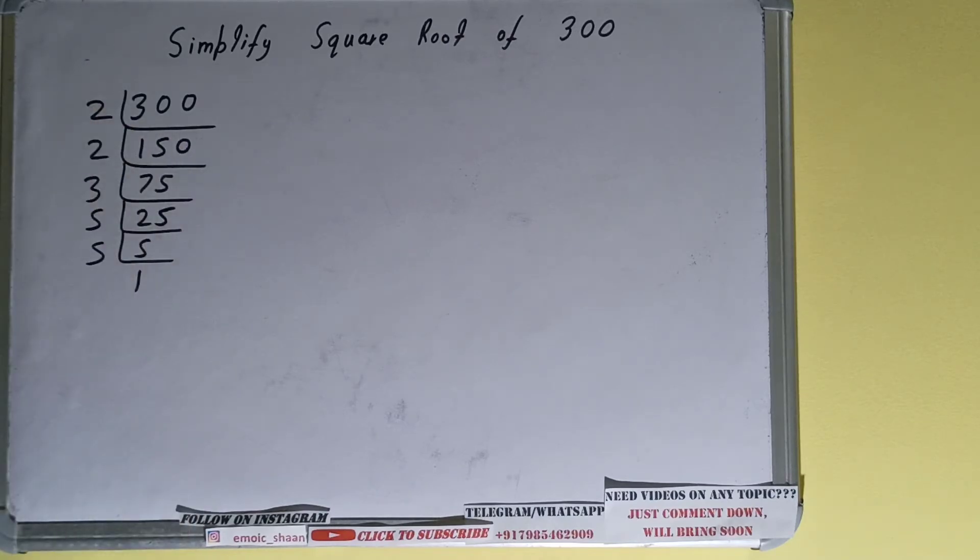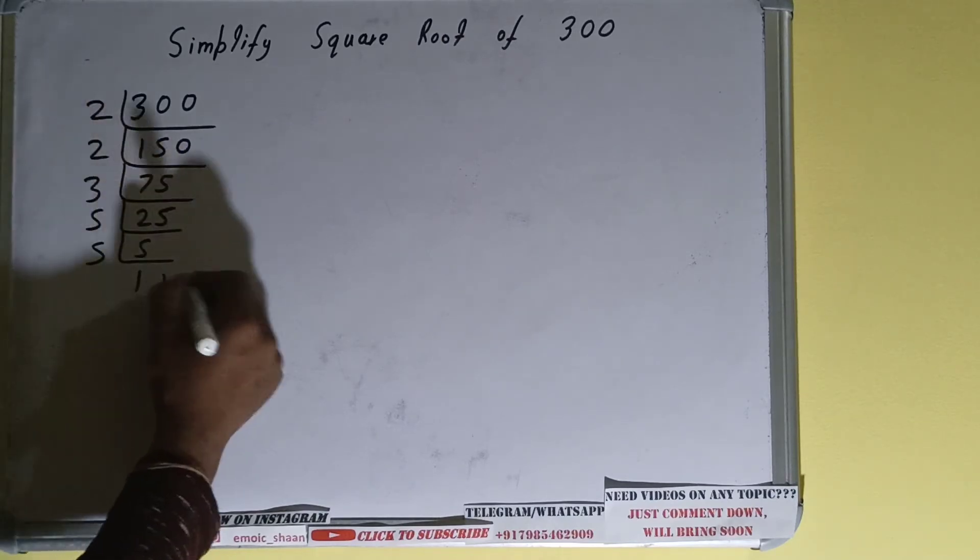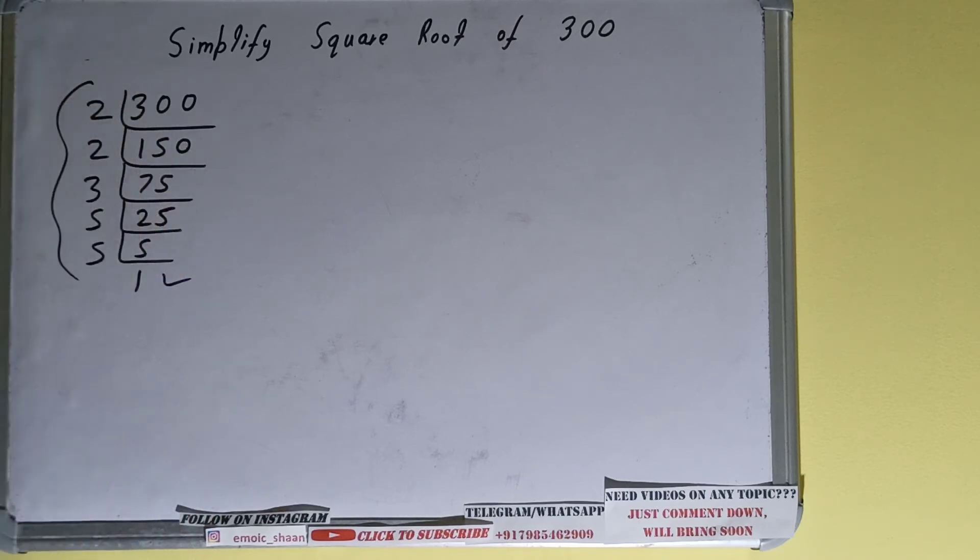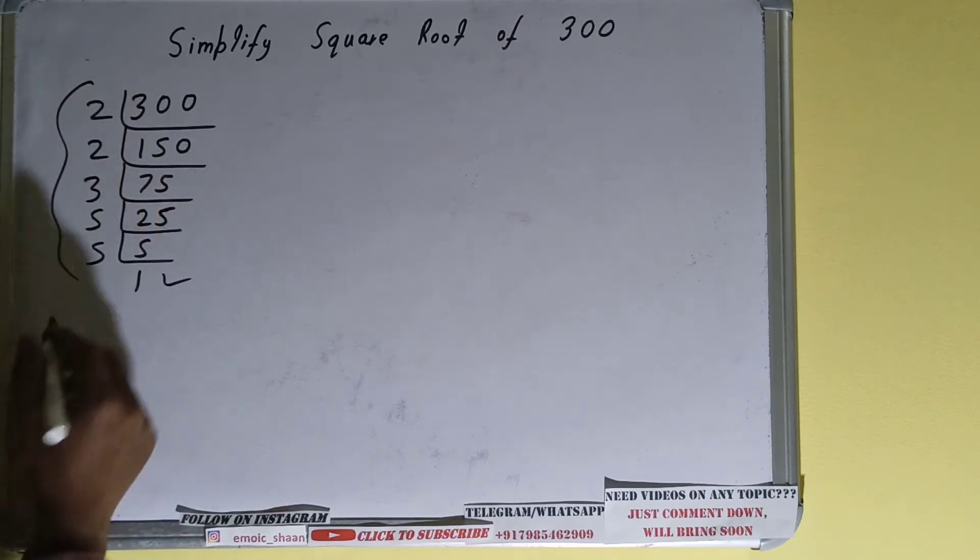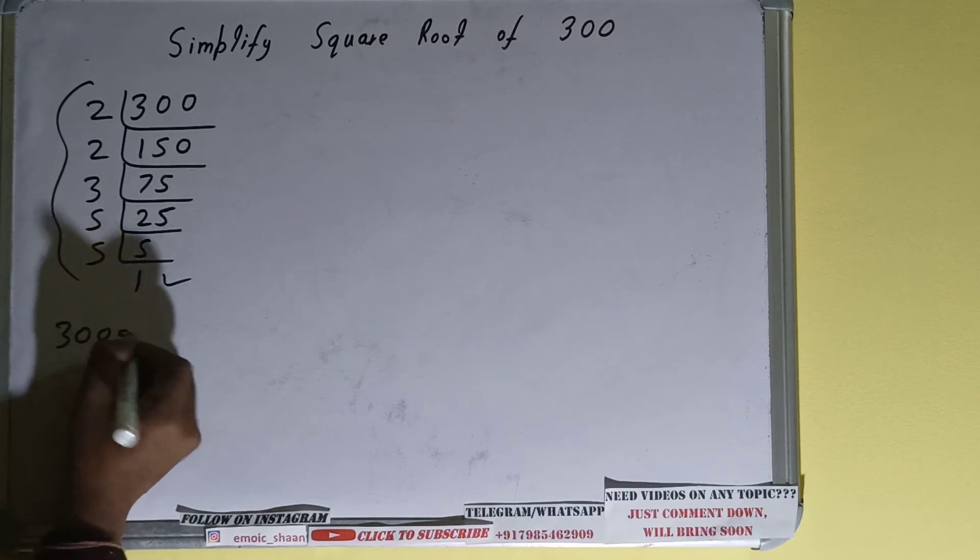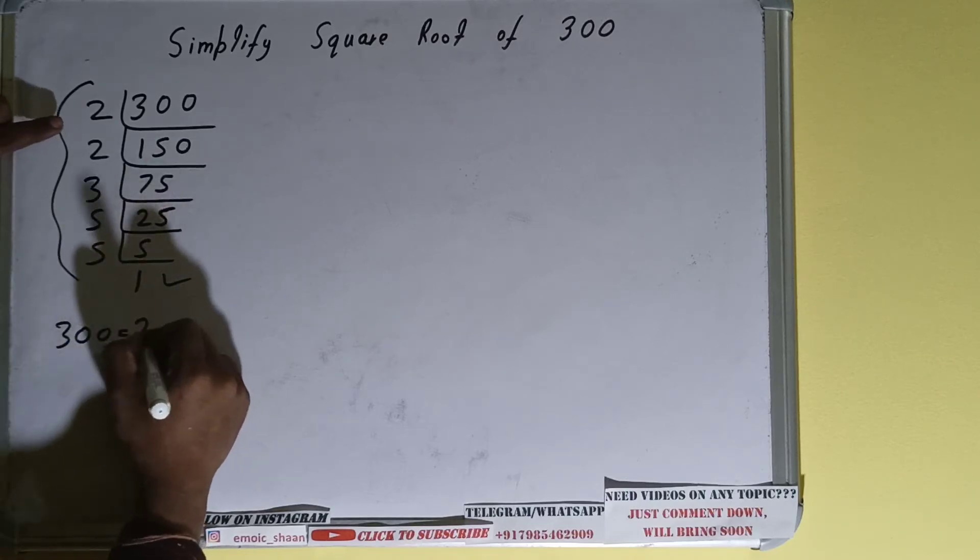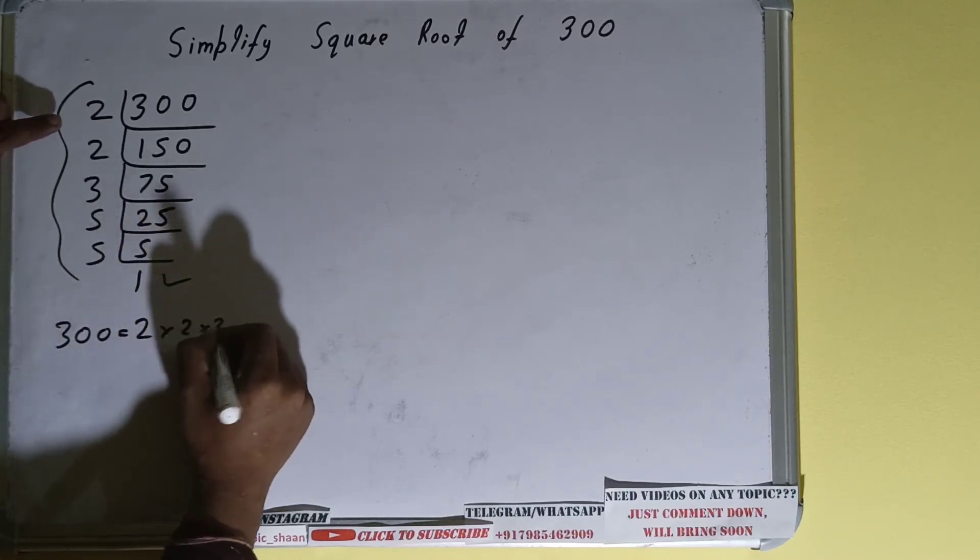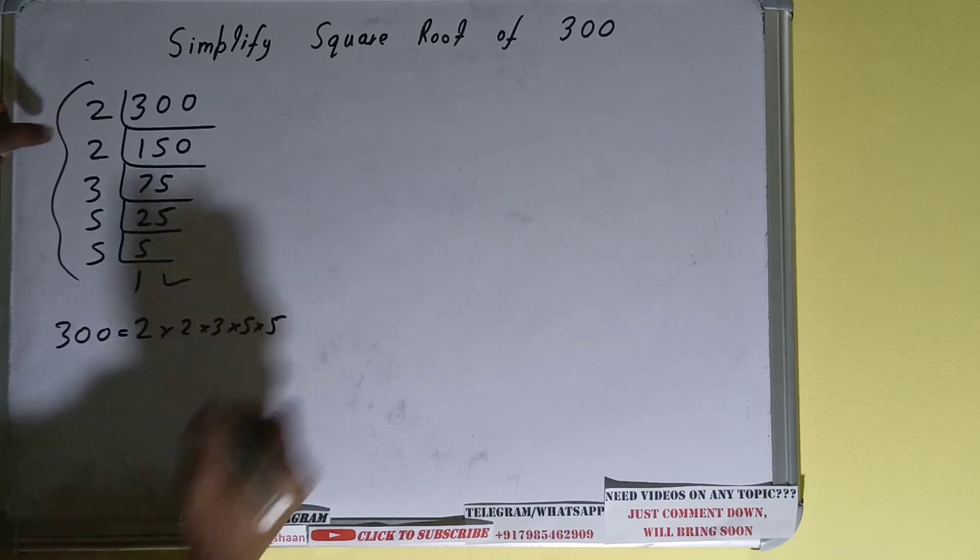We'll be having 1. Once we get 1 we need to stop, and whatever is on the left-hand side will be the set of prime factors for the number 300. So we can write it: 2 × 2 × 3 × 5 × 5.